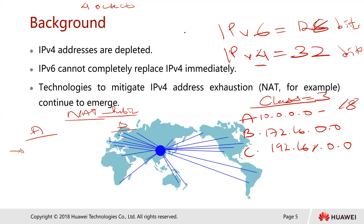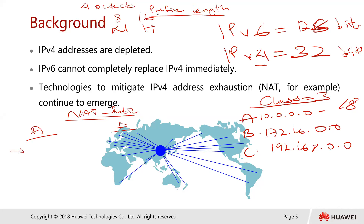Eight is the prefix length of Class A, and eight represents the first octet of the subnet mask. It represents the network bits, and the remaining three octets represent the host bits.